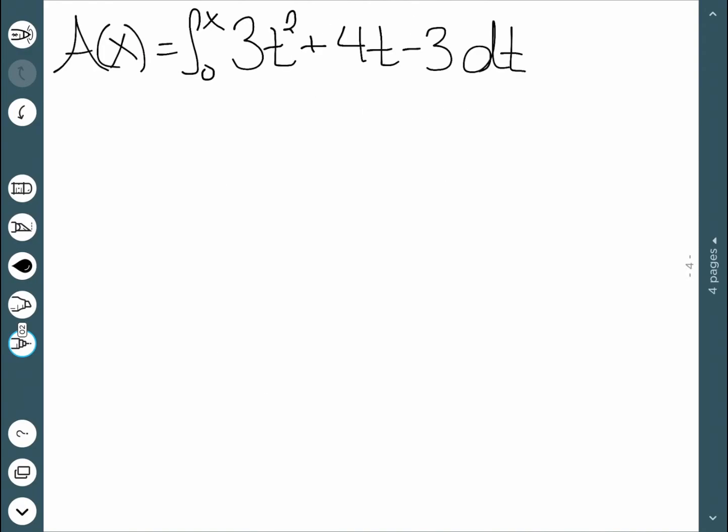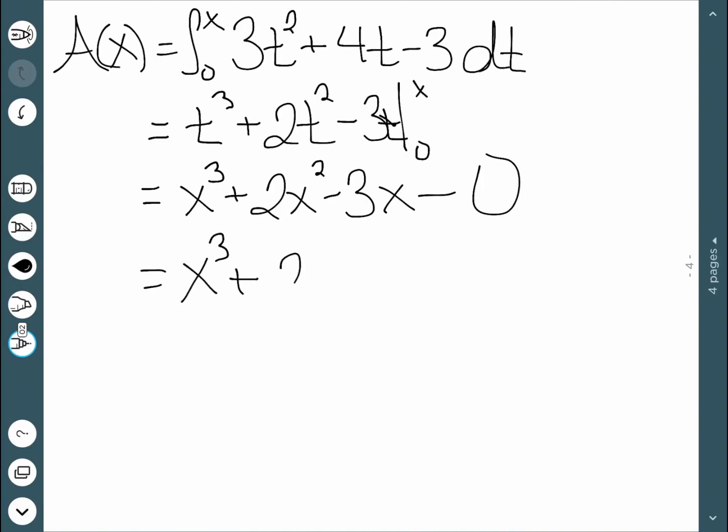For our next example, I have the same function I had before, but this time I'm going to try to find a general formula for A of x. So we're going to integrate the same way we have been doing. We'll still get t cubed plus 2t squared minus 3t, but this time we're going to go between 0 and x. When I stick in x, I get x cubed plus 2x squared minus 3x minus sticking in the lower limit, which is just 0. So my area is x cubed plus 2x squared minus 3x.